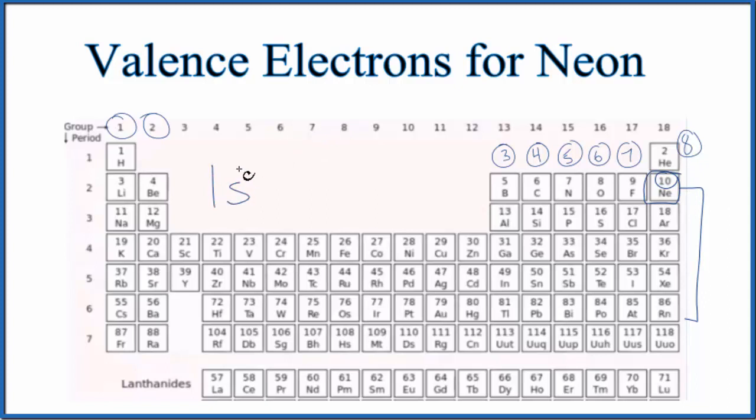We have 1s2. This energy level is full. Then 2s2, and then we have 2p6. We've used all 10 of our electrons for neon.